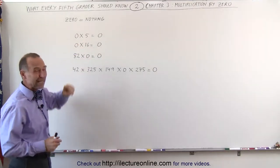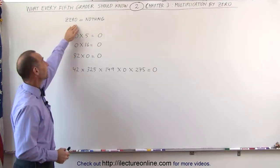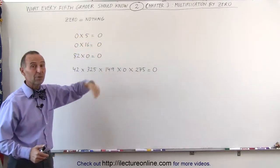Anytime we multiply by zero, we need to keep in mind that zero means nothing. So when you multiply by zero, you end up with nothing.